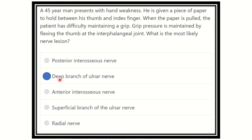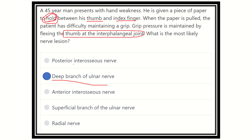Our final answer is the deep branch of the ulnar nerve, because it supplies the adductor pollicis muscle, which is responsible for holding a paper, card, or coin between the thumb and index finger. When this power is lost, grip pressure is maintained by the flexor pollicis longus, which flexes the thumb at the interphalangeal joint. The deep branch of the ulnar nerve supplies the adductor pollicis muscle.